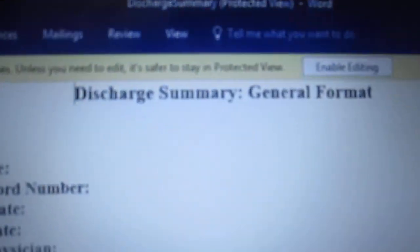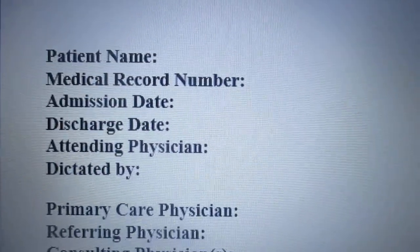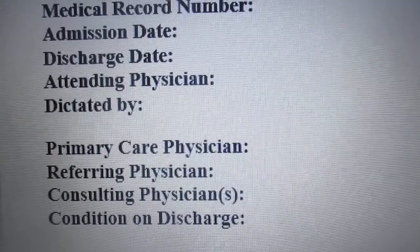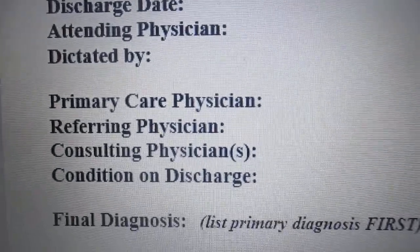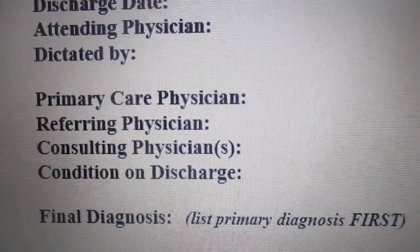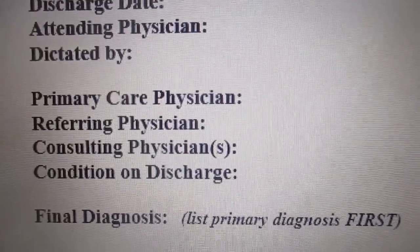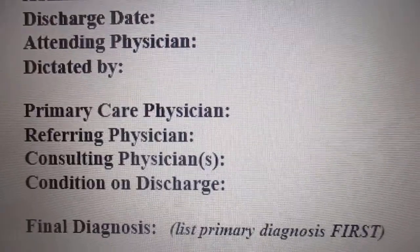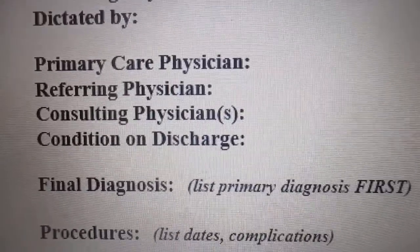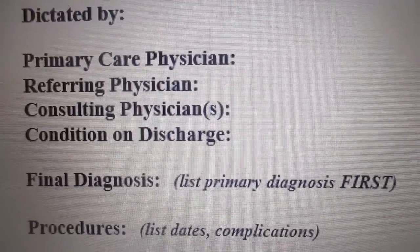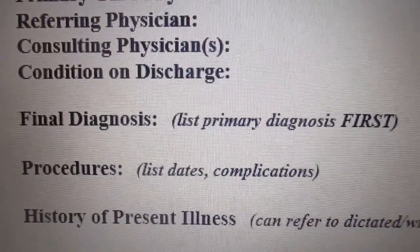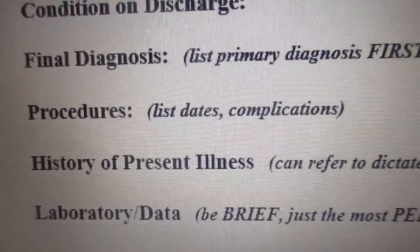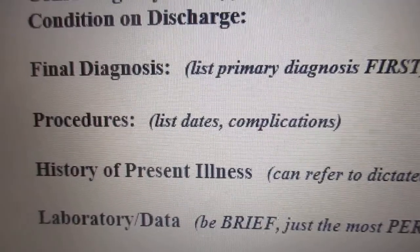Notice it's got the header 'Discharge Summary.' It identifies your patient with patient name, medical record number, admission date, and discharge date. Notice it's got attending physician and dictated by, then it says primary care physician, referring physician, and consulting physician. We really have to identify all physicians involved in care, because these days your attending physician could admit you and a hospitalist could be taking care of you while there. Notice it also says 'Condition on Discharge' — as a coder, that's what I'm looking for — your final diagnoses right there. It notes to list primary diagnoses first, any procedures performed, and then history of present illness and any laboratory data.